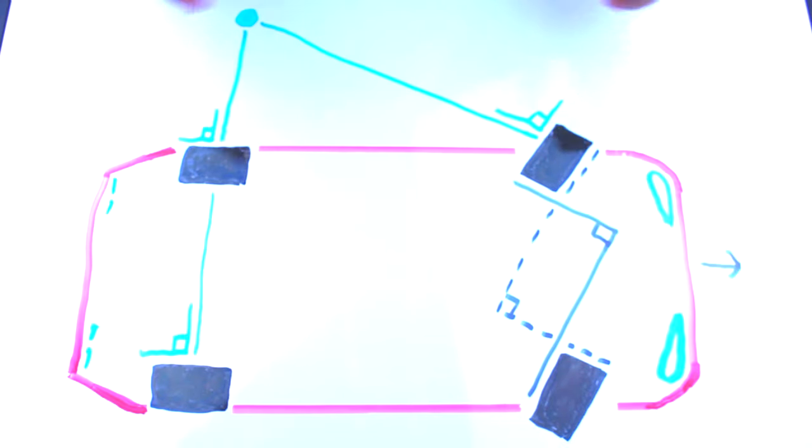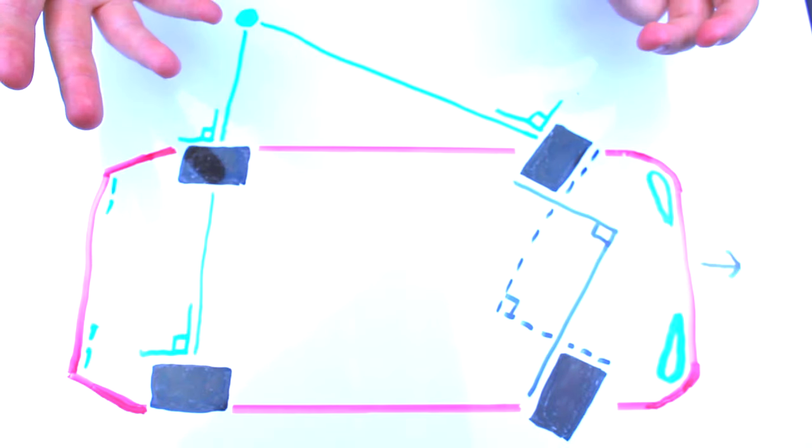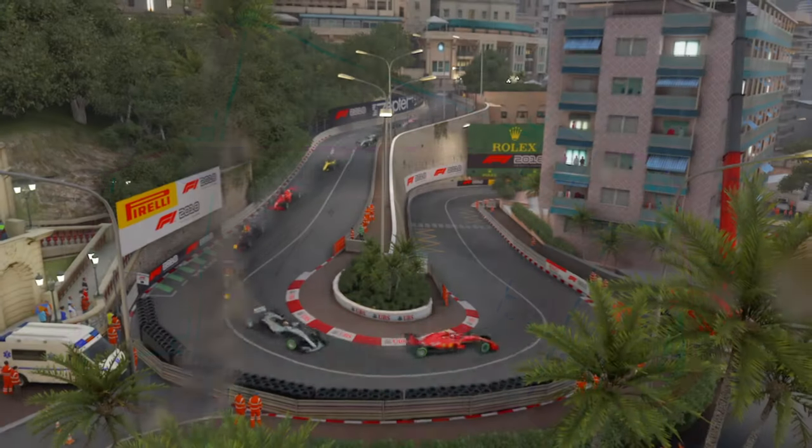Here I've drawn an overhead view of a car taking an absurdly sharp turn around a corner. Let's say it's that hairpin turn at Monaco.